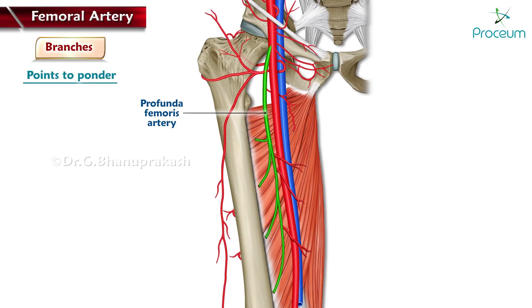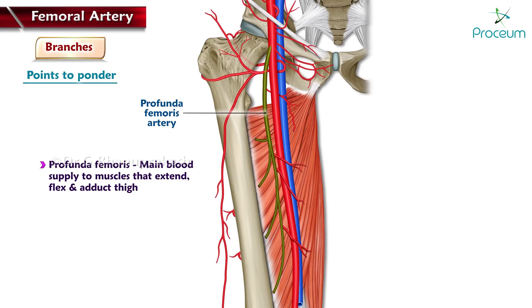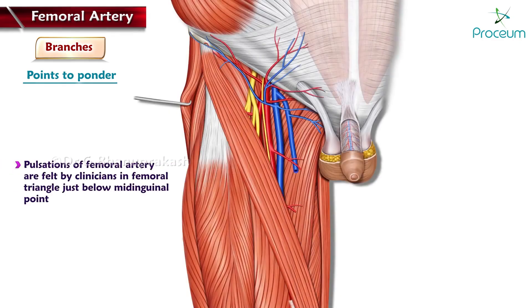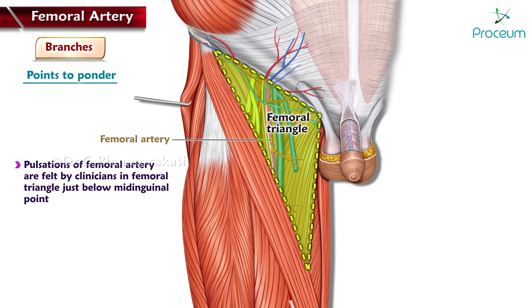Points to ponder: the profunda femoris is the main blood supply to the muscles that extend, flex, and adduct the thigh. The pulsations of the femoral artery are felt by clinicians in the femoral triangle just below the mid-inguinal point.